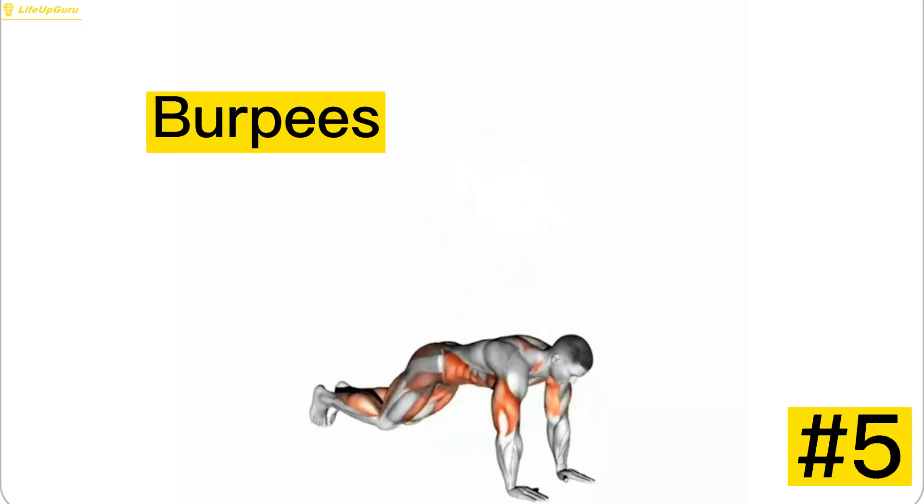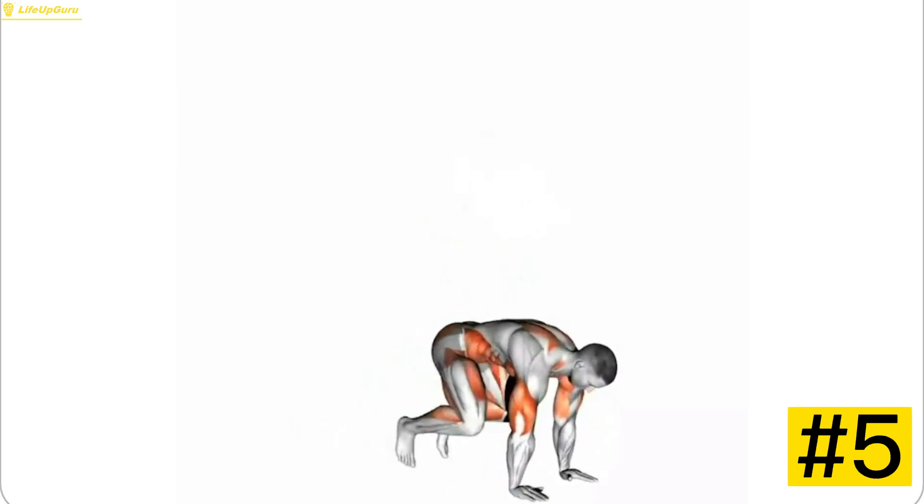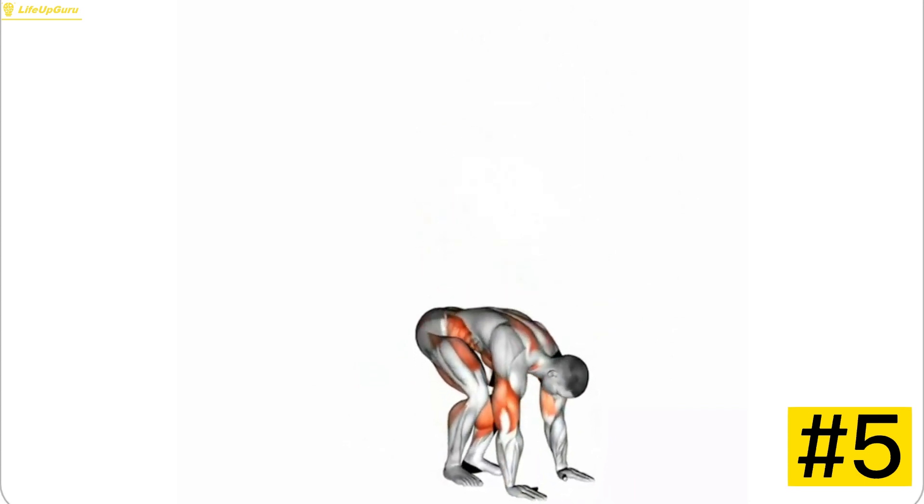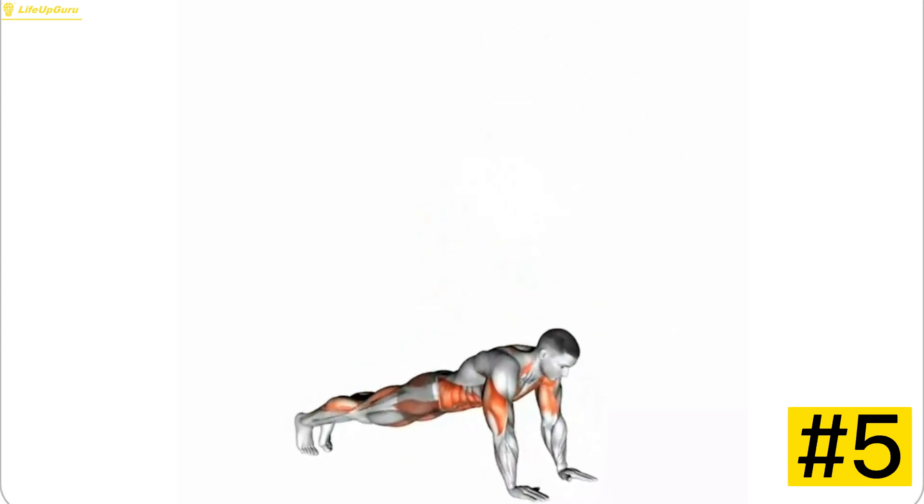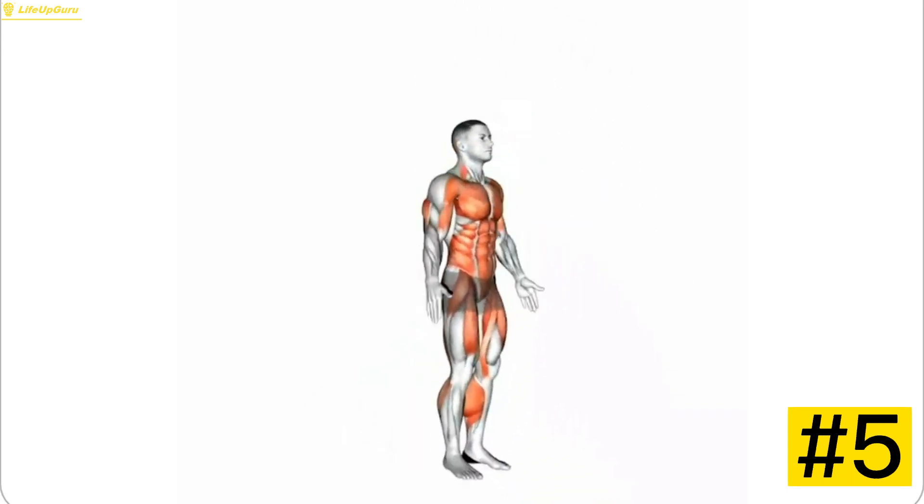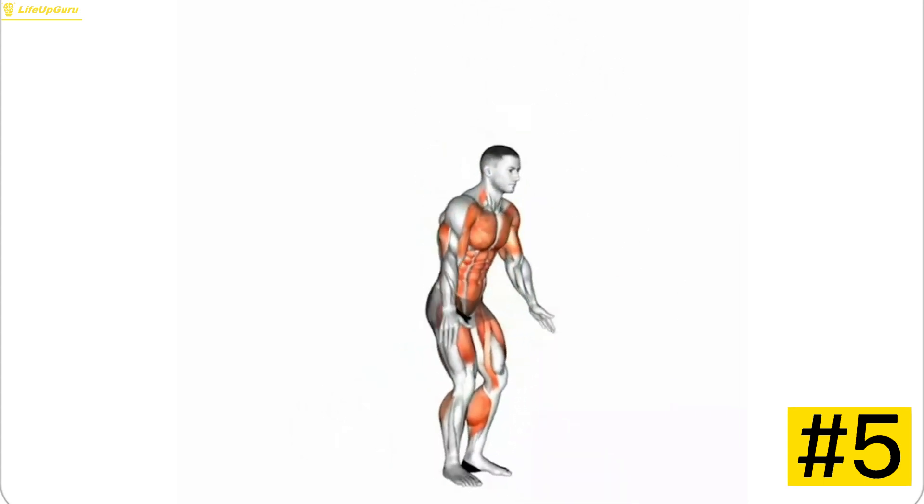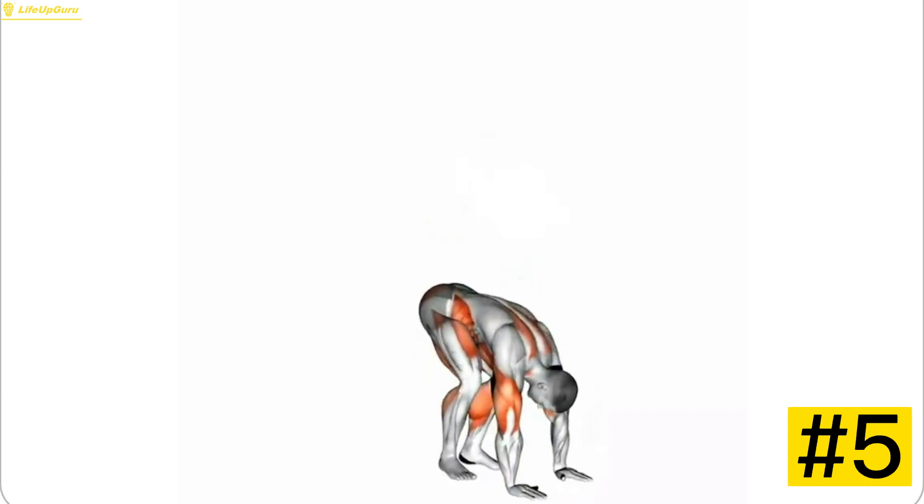Exercise 5, Burpees. If you're looking for a total body workout, burpees are your best friend. They target your arms, chest, legs, and core while providing a cardiovascular challenge. Begin in a standing position, drop down into a push-up, jump your feet back in, and explosively jump up with your hands reaching towards the sky.